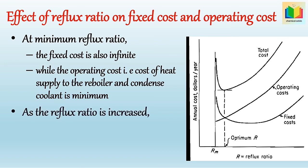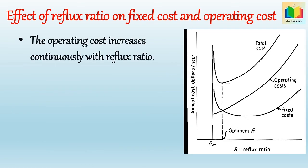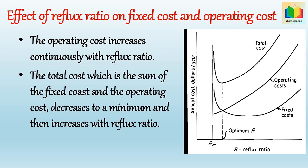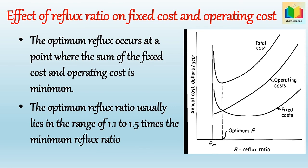As the reflux ratio is increased, the fixed cost first decreases, then passes through a minimum, and then increases. The total cost, which is the sum of fixed cost and operating cost, decreases to a minimum and then increases with the reflux ratio. Hence, the optimum reflux occurs at the point where the sum of fixed cost and operating cost is minimum. The optimum reflux ratio usually lies in the range of 1.1 to 1.5 times the minimum reflux ratio.